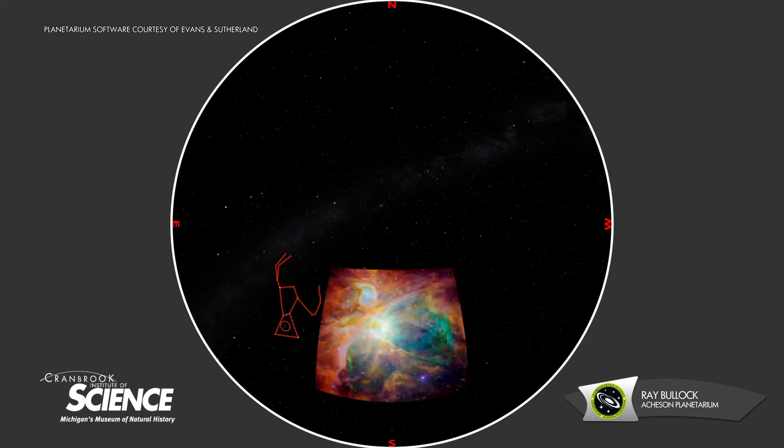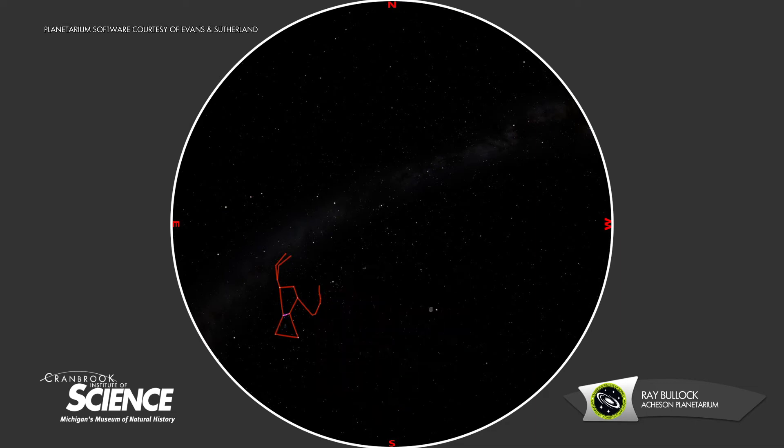Orion will guide us to many more constellations. If we draw a line through Orion's belt from bottom to top and extend it the same direction, we'll go past a bright orangish star and come to a tiny dipper. The tiny dipper is called the Pleiades, or the Seven Sisters. The Pleiades marks the shoulder of Taurus the bull.